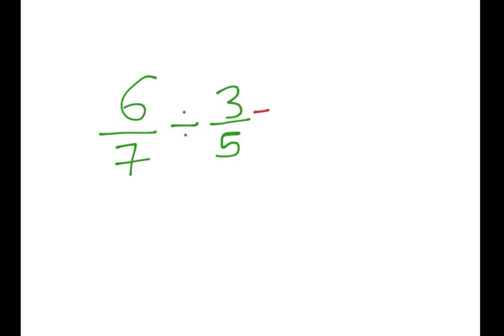Here's another one for you guys. So we have 6 over 7 divided by 3 over 5. Now if you use my trick again, we leave the first fraction, we change divided to times, and we flip this second fraction. So we end up with 5 over 3.